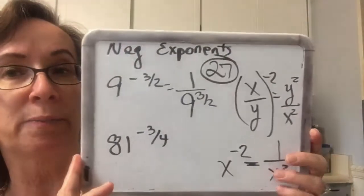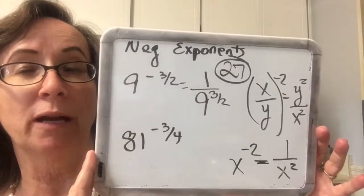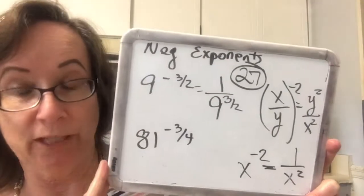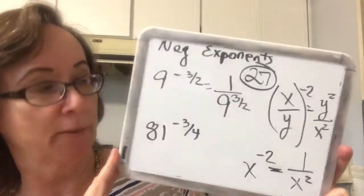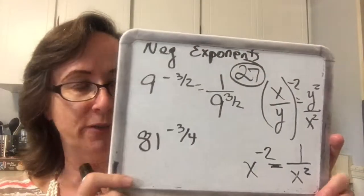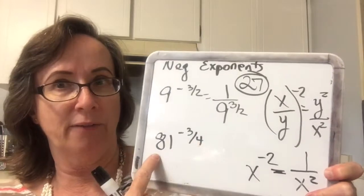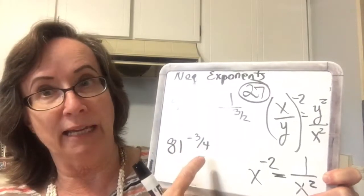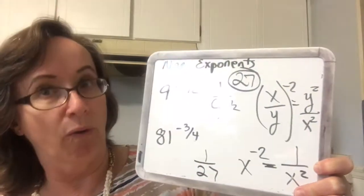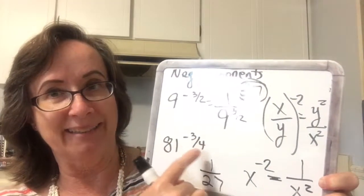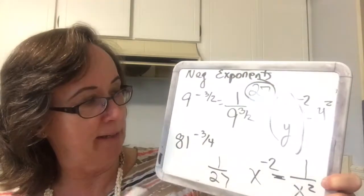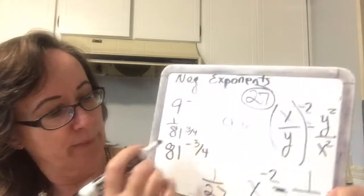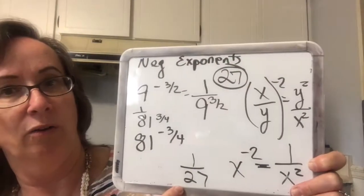Usually, but not always, it's easiest and you'll keep your numbers smaller if you do the root and then the power. 81 to the negative 3/4 — we take the fourth root of 81, which is 3. Then 3 to the negative 3 would be 1 over 27. Or we could have just flipped it at the beginning and made it 1 over 81 to the 3/4, and I would still get 1 over 27.